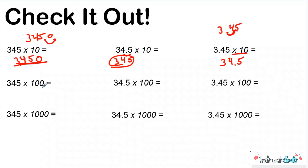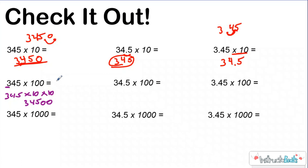Now let's multiply by one hundred. I'm going to use my associative property knowledge to break one hundred into ten times ten. So each time I multiply by ten, I can just move all the digits one place value over. If I multiply times two tens, my three can go from the hundreds place all the way to the thousands and then the ten-thousands. So I should have three in the ten-thousands, four in the thousands, five in the hundreds, and then I need to add two zeros. My answer is going to be thirty-four thousand five hundred. Really, you're just moving your decimal one, two places and filling in zeros.